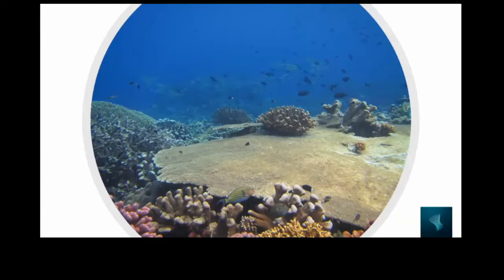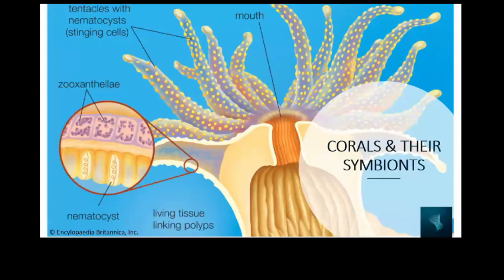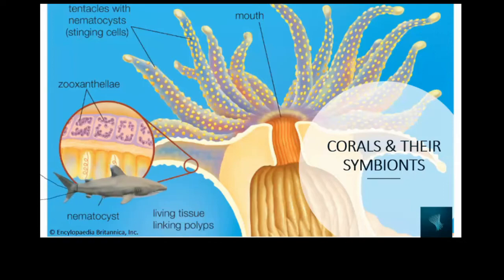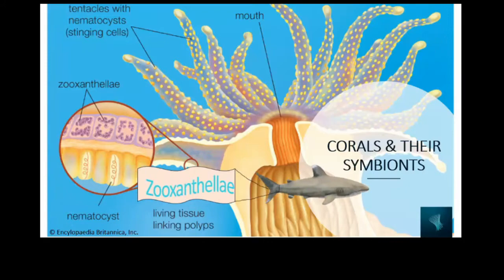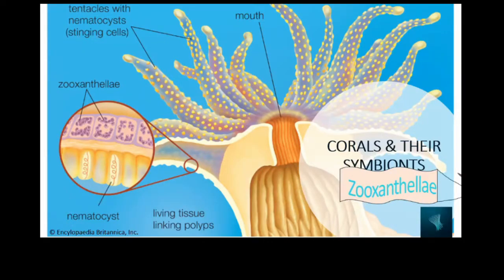As a reminder, coral reefs are built by cnidarian animals — the corals. We've talked a lot about what corals are and how they build these structures in past webinars. Today I'd like to focus more on the symbiosis that exists between corals and their symbionts. Everywhere inside the coral tissues are symbionts called Symbiodinium — dinoflagellate algae that can conduct photosynthesis, producing sugars and food for the coral using only sunlight and nutrients. This symbiosis is really important for corals to survive and stay healthy.